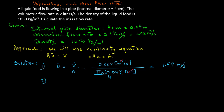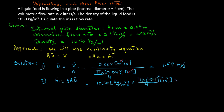Now we can use the equation for mass flow rate, since we know the density, the cross-sectional area, and the velocity. We have 1050 kilograms per cubic meters multiplied by the cross-sectional area pi times 0.04 squared divided by four — with units of meters squared — multiplied by 1.59 meters per second. Cancelling out the meter units, we are left with kilograms per second.